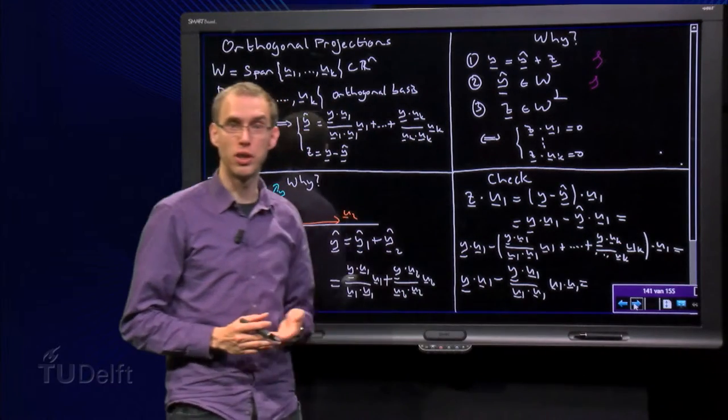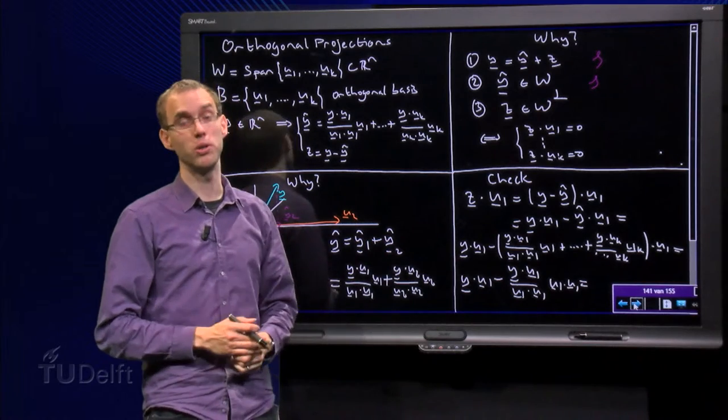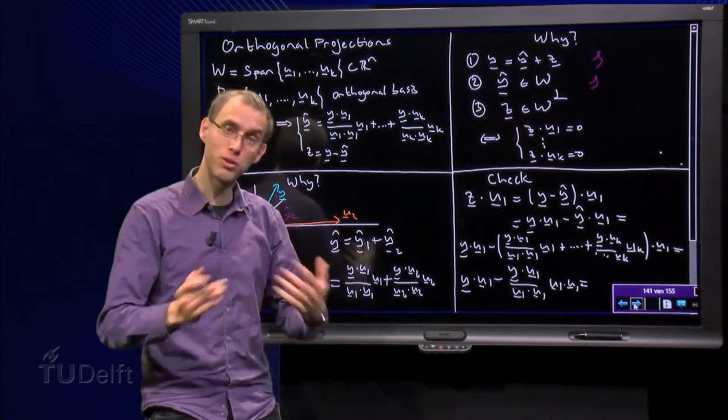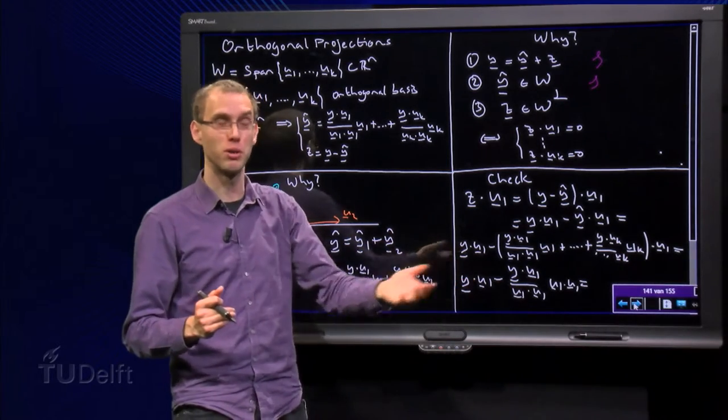But uk inner product u1 for example equals zero because we have an orthogonal basis, u2 inner product u1 also equals zero because we have an orthogonal basis. And u3 inner product u1 equals zero because, well, you guessed it, we have an orthogonal basis.